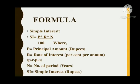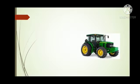The formula for calculating simple interest is: SI equals P multiplied by R multiplied by N, divided by 100 — where P is the principal amount in rupees, R is the rate of interest percent per annum, and N is the number of years.